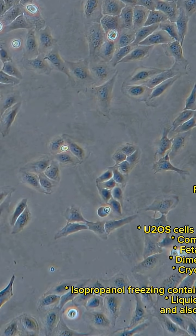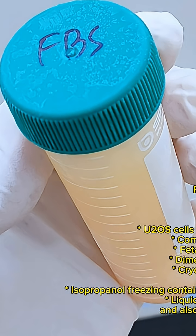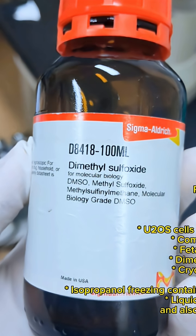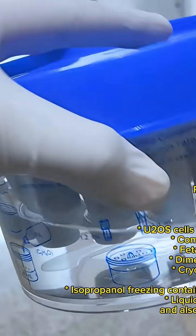Prepare materials. You'll need U2OS cells that are healthy and 70-90% confluent, complete growth medium, fetal bovine serum (FBS), dimethyl sulfoxide (DMSO), sterile labeled cryo vials, and a cryo box.